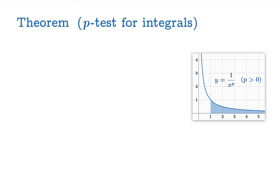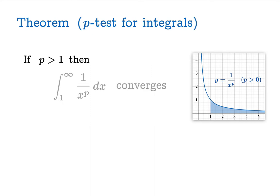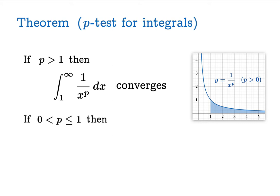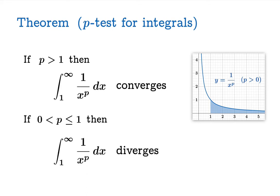Here's the theorem — we'll call it the p-test for integrals. If p is greater than 1, then the improper integral from 1 to infinity of 1 over x to the p converges. And if p is less than or equal to 1, then this integral diverges.